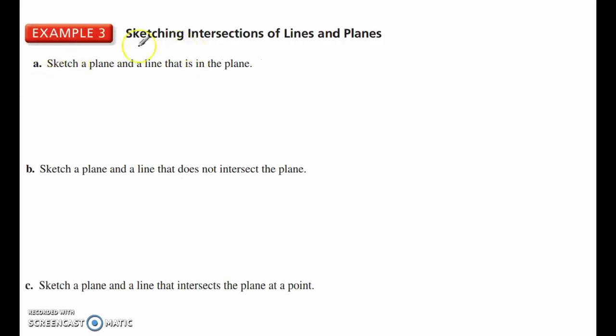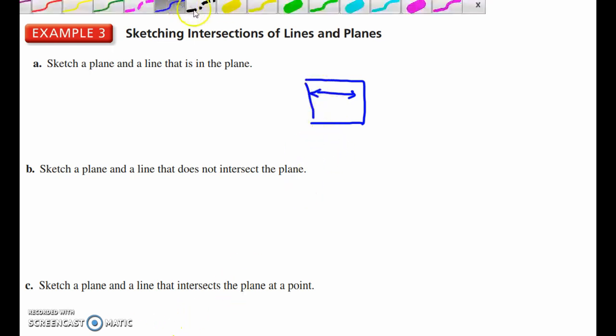Alright, let's look at a couple examples here, sketching intersections of lines and planes. Sketch a plane and a line that is in the plane. Okay, different ways you can do that. So here we've got a plane, and there's a line in the plane. We could call this plane M and line L.